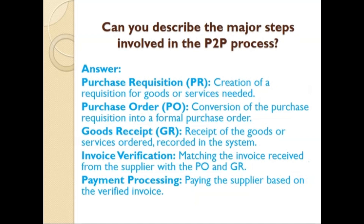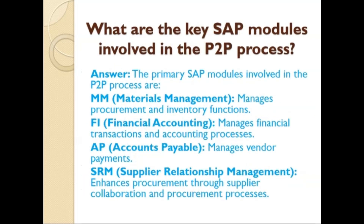Can you describe the major steps involved in the P2P process? Purchase Requisition: creation of a requisition for goods and services needed. Purchase Order: conversion of the purchase requisition into a formal purchase order. Goods Receipt: receipt of the goods or services ordered, recorded in the system. Invoice Verification: matching the invoice received from the supplier with the PO and GR. Payment Processing: paying the supplier based on the verified invoice.